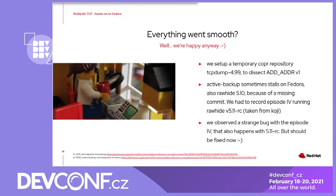There is a small attention point for those willing to replicate the same tests on their Fedora host. First, the AddAddress option specified in version 1 of the protocol is not dissected correctly by the official Fedora TCP dump binary, so we had to use a more recent version compiled and placed in a corporate repository. Secondly, in order to test active backup operation properly, we needed a recent kernel very close to the latest 5.11 RC. There were some bugs in the active backup behavior discovered while adding support for simultaneous active subflows, and those bugs have been fixed very recently.